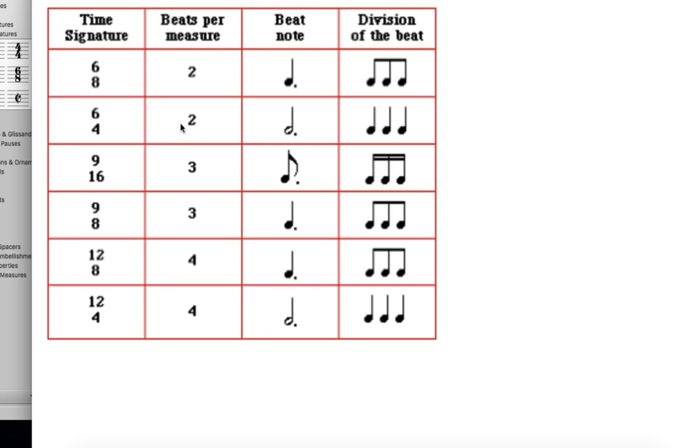So 6/4, two beats per measure. The beat here is dotted half note. And quarter notes are the division of the beat. Three quarter notes are the division of the beat.